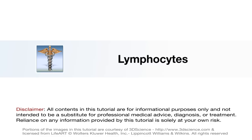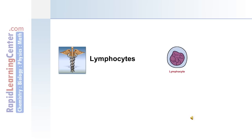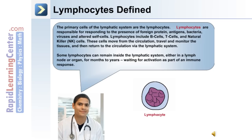Now let's move on to discuss the major cell type of the lymphatic system, lymphocytes, including the formation of lymphocytes and the lymphocytes themselves: B cells, T cells, and natural killer cells. The primary cells of the lymphatic system are the lymphocytes. These cells are responsible for responding to the presence of foreign proteins, antigens, bacteria, viruses, and altered or infected self-cells. Lymphocytes include B cells, T cells, and natural killer or NK cells.